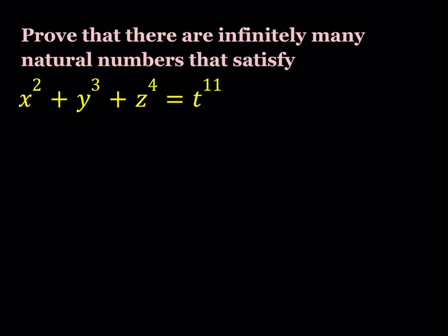Hello everyone, in this video we're going to be solving a number theory problem from Junior Balkan Math Olympiads. Prove that there are infinitely many natural numbers that satisfy x squared plus y cubed plus z to the fourth equals t to the power 11. So we're not trying to find all solutions to this equation, we're just proving that there will be infinitely many. Here's how we can proceed.